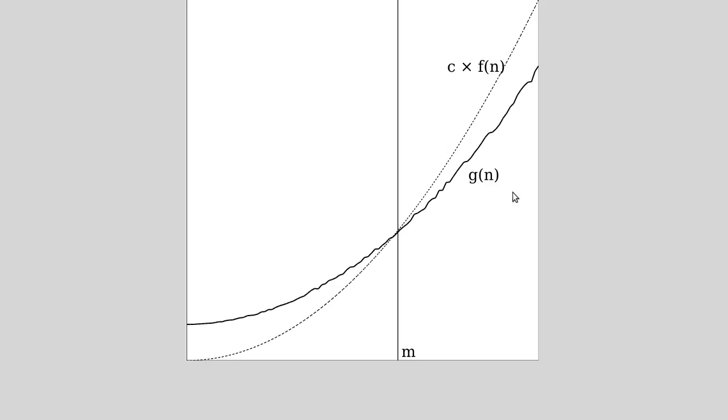Since technically the big O is only an upper bound, a lot of times what people really mean is something slightly different, which is a capital theta, which is both an upper and a lower bound. But we often just say big O. If nothing else, it's a lot easier to type - it's on your keyboard.